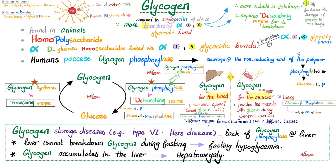The only organ that can give you free glucose without phosphate is the liver. The muscle can never do it. When the liver breaks down its own glycogen, it can give pure glucose to the blood, which goes to every other organ — heart, brain, muscles, kidneys. But when the muscle breaks down its glycogen, it only goes to glucose-6-phosphate and stops, because the muscle lacks glucose-6-phosphatase. Phosphorylation traps glucose-6-phosphate in the muscle. Therefore, muscle glycogen can never serve as a source of glucose for the blood.